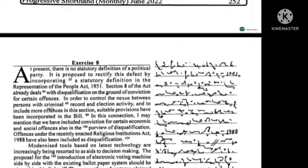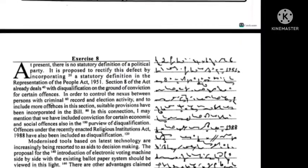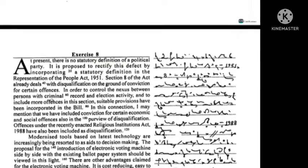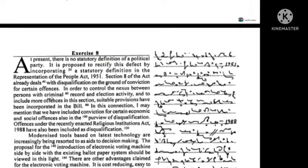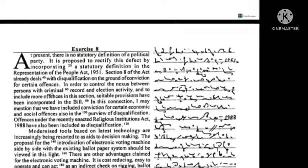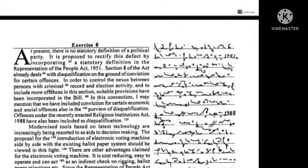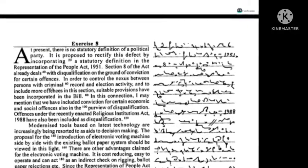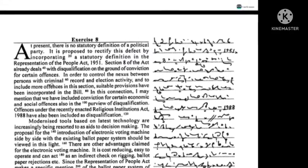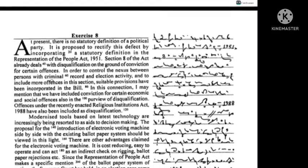There are other advantages claimed for the electronic voting machine: it is cost-reducing, easy to operate, and can act as an indirect check on rigging, ballot paper rejections, etc. Since the Representation of the People Act makes a specific mention of the ballot paper system of voting, the Supreme Court has held in an election case some time ago that electronic voting machines require a legislative basis.